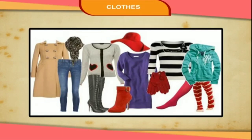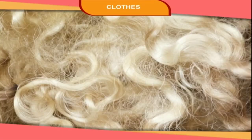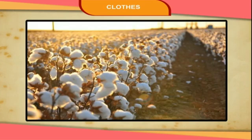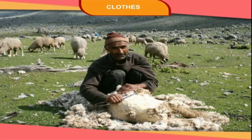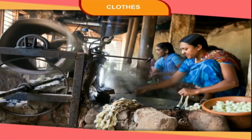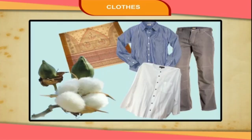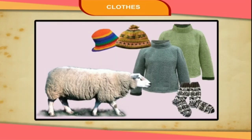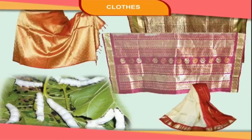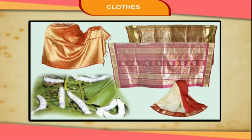We wear different kinds of clothes. Clothes are made from fibers. We get fibers from cotton plants, sheep and silkworms. We get cotton from cotton plants, wool from sheep, and silk from silkworms. Cotton, wool and silk are called natural fibers. Shirts, sarees, bed sheets etc. are made from cotton. Wool is used to knit clothes like sweaters, caps and socks. Silk is used to make clothes like sarees and salwar kameez.